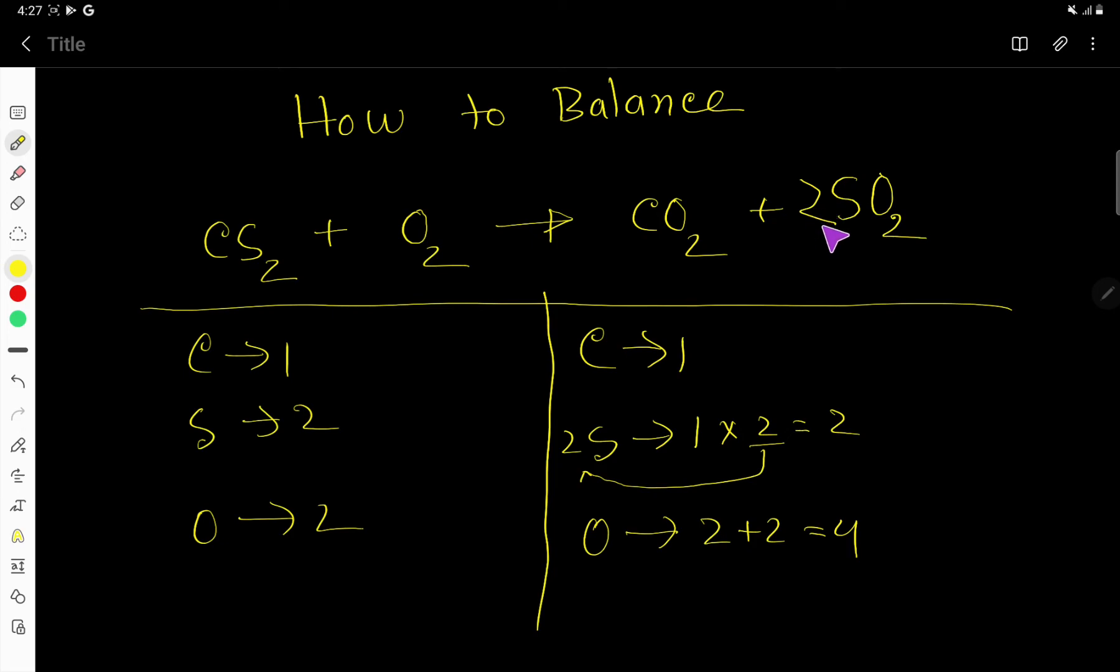This 2 is a coefficient and this 2 is a subscript. Here we have subscript 1. Usually we don't write the subscript 1. So now if you place here 2, the number of sulfur is 2. The number of oxygen will be 2 times 2. 2 times 2, that is 4. So here you have to write 4. 2 times 2 is 4.